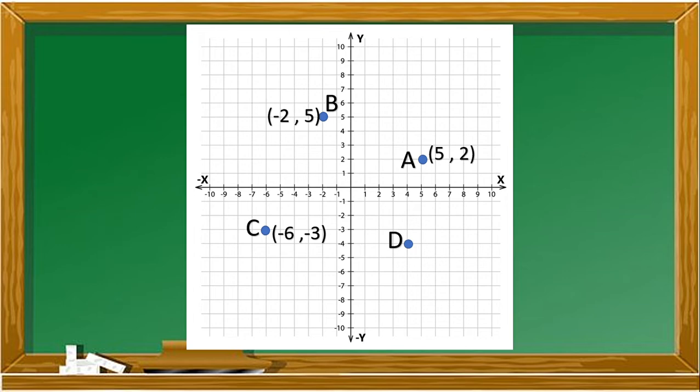What is the ordered pair or coordinate of our point D? For our point D, it is four units to the right and four units down. It is in quadrant four, and the coordinates are four and negative four. The sign of our coordinate in our fourth quadrant is positive and negative.